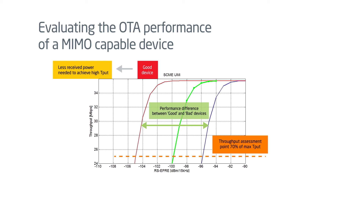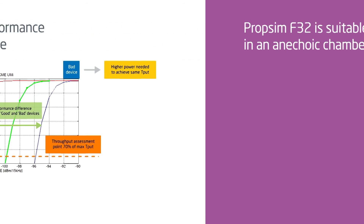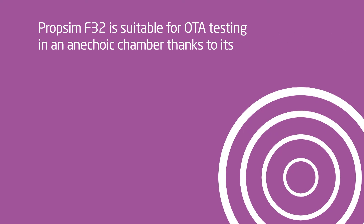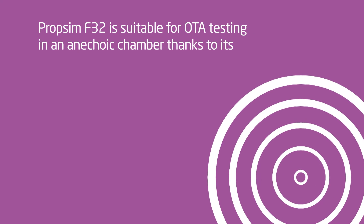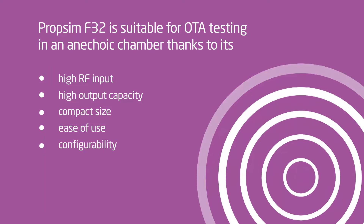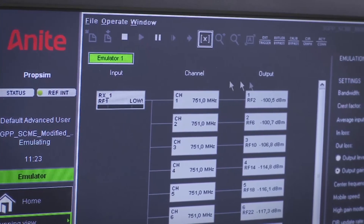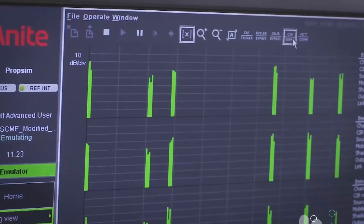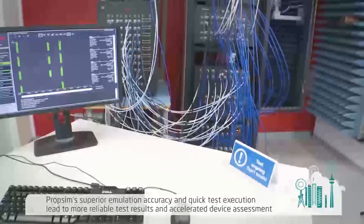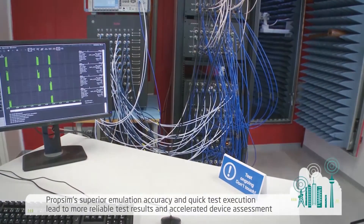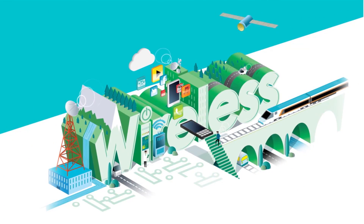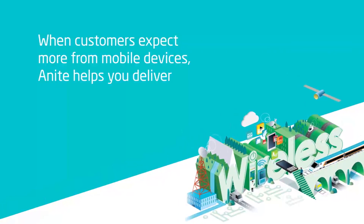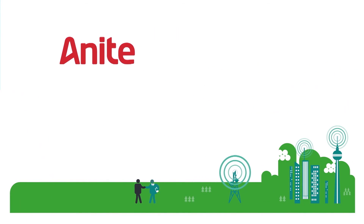The over-the-air performance of one device can then be compared with that of another device. PropSim F32 is suitable for OTA testing in an anechoic chamber thanks to its high RF input-output capacity, compact size, ease of use, and configurability. PropSim's superior emulation accuracy and quick test execution lead to more reliable test results and accelerated device assessment. When customers expect more from mobile devices, Anite helps you deliver.